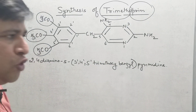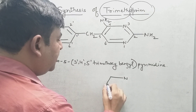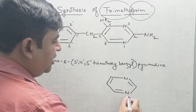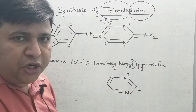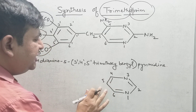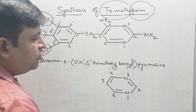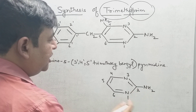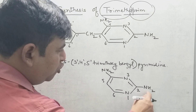'Prim' means it contains a pyrimidine ring. To draw the pyrimidine ring, simply put two nitrogens at the first and third positions. This is the pyrimidine ring — at positions one and three, two nitrogens are present. At the second and fourth positions, put two amino (NH2) groups.